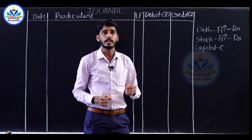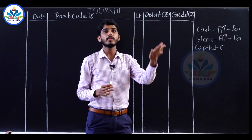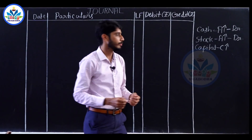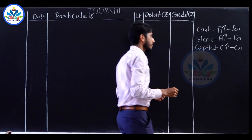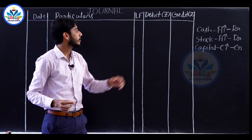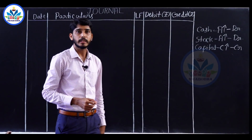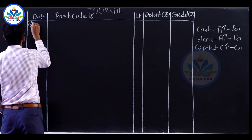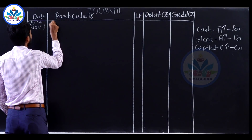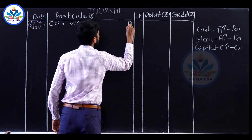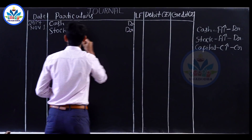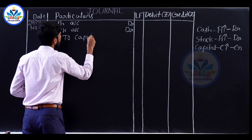Capital is capital. You are starting your business by investing capital, so the capital value also increases. The rule says that whenever the capital value increases, it has to be credited. So the journal entry will be: cash account debit, stock account debit to capital account. Date is 2017, November 1st.